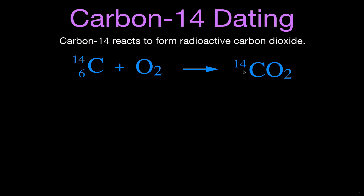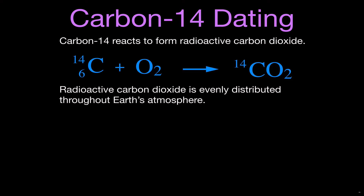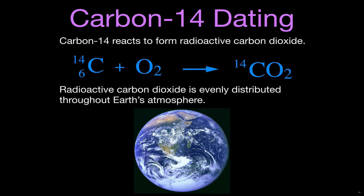The carbon-14 in the upper atmosphere combines with oxygen to produce radioactive carbon dioxide. That carbon dioxide is then blown around and evenly distributed in Earth's atmosphere, so the concentration of carbon-14 carbon dioxide is the same everywhere in Earth's atmosphere. Anywhere you go in the atmosphere, the concentration of carbon-14 is the same.